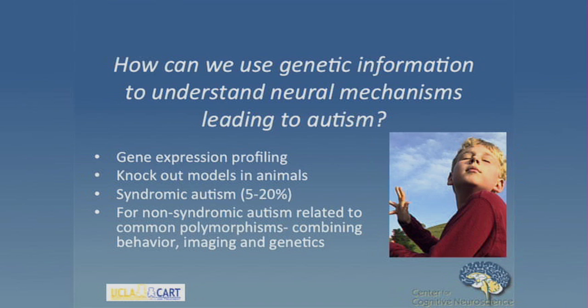Over the course of the next 45 minutes or so, I'm going to talk about three autism risk genes that we've studied, their relationship to brain function, and in particular to brain functional connectivity. I'll also talk about properties of connectivity in the brain more generally — what constitutes a well-connected brain, what we mean by connectivity, and how we can make sense of that in a way to understand how processing is different when connectivity is altered, focusing primarily on graph theoretical methods.